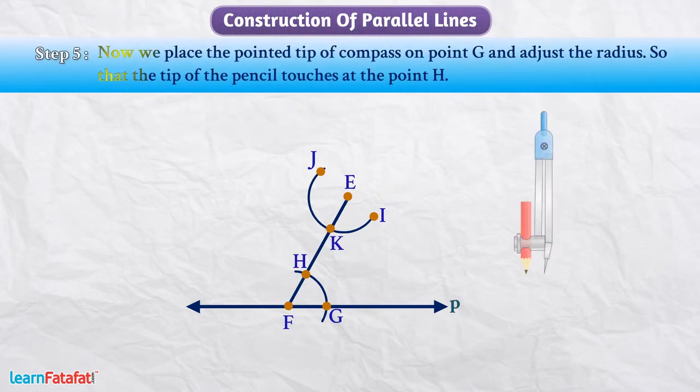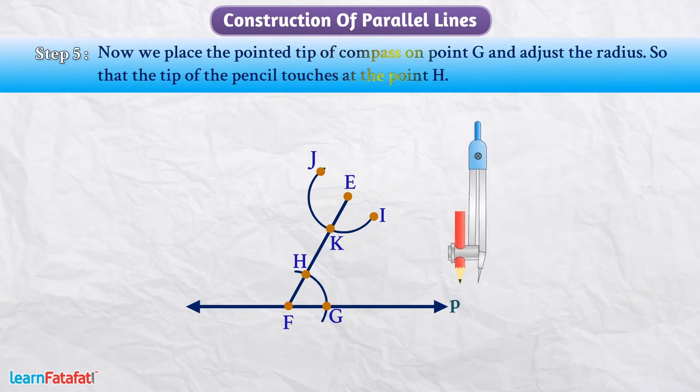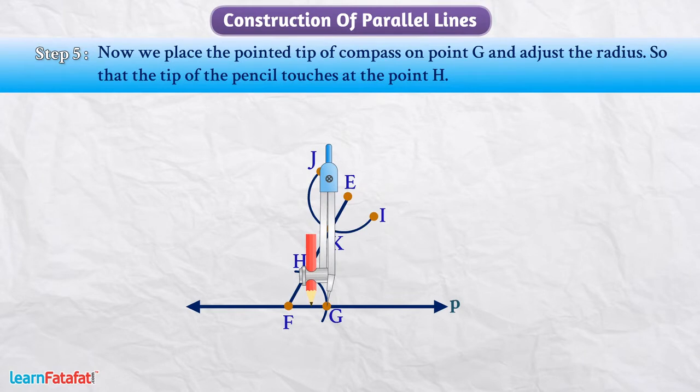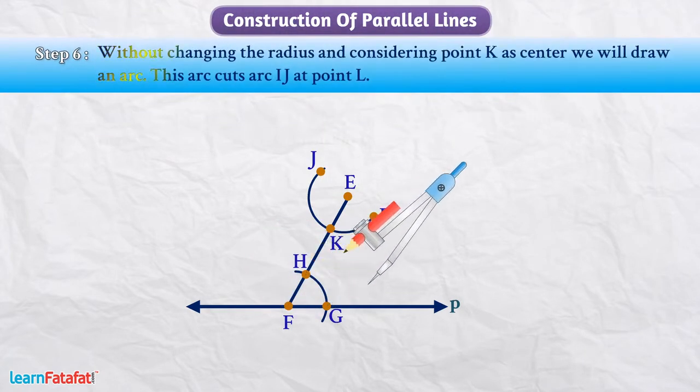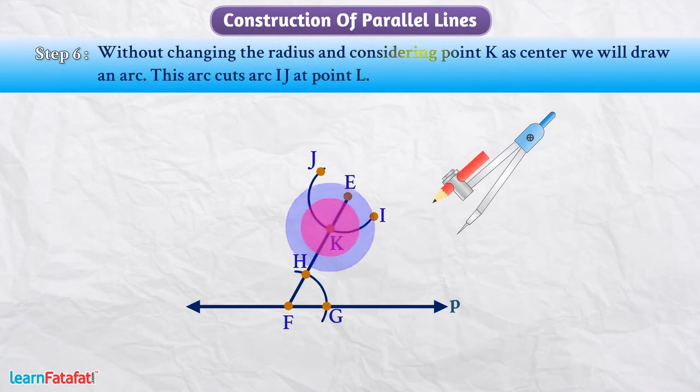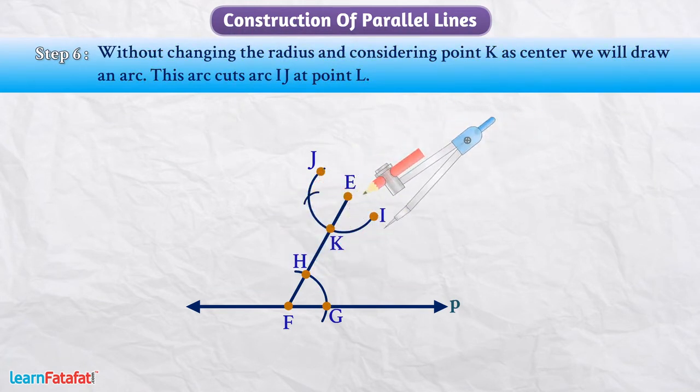Now, we place the pointed tip of the compass on point G and adjust the radius so that the tip of the pencil touches at point H. Without changing the radius and considering point K as center, we will draw an arc. This arc cuts arc IJ at point L.